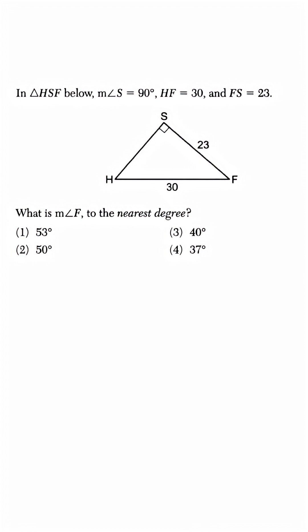They give us a right triangle with two side lengths, and they want us to determine the angle measure for angle F. To do this, we're going to have to use a trig function.